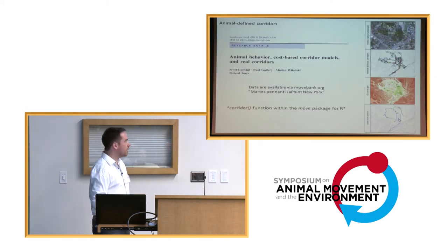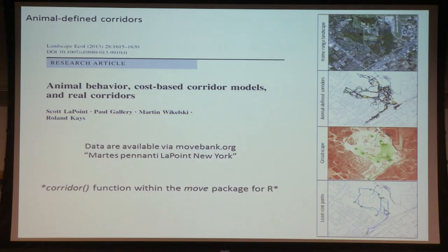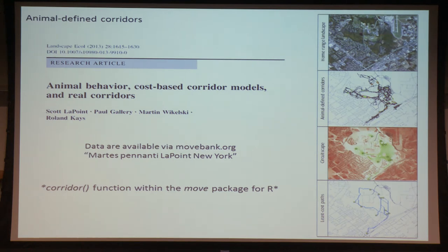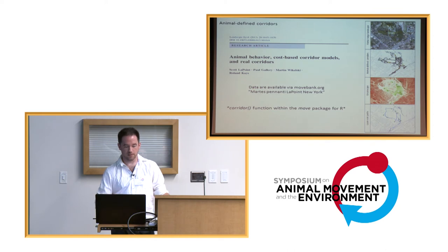We wrote it up and published it about a year ago. I put all the location data online — you can go look at it yourself on Movebank. The part I'd really like you to do is check out the data, and if you have your own data on Movebank or even if you don't, we can use the Move package, upload your own data, and see if your animals are using corridors. Ask yourself some questions, and ask me some questions because I'm very interested in the idea.